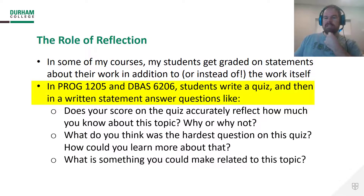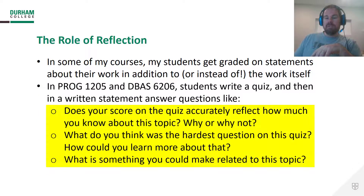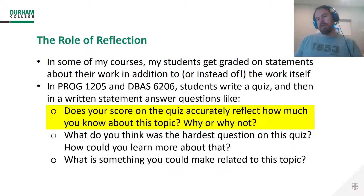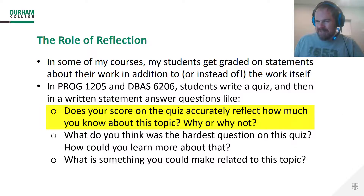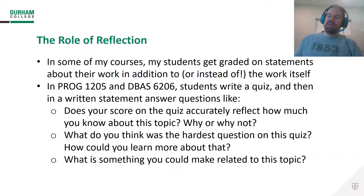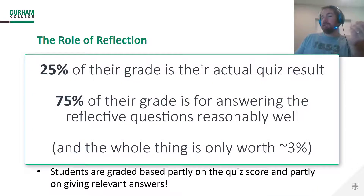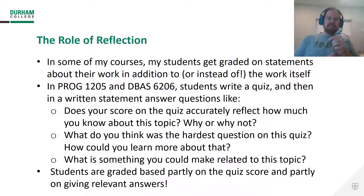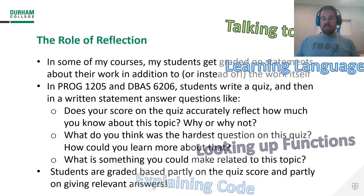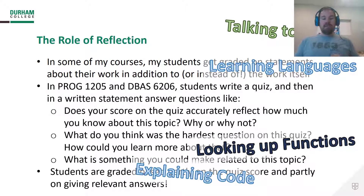In some courses, like PROG 1205 and DBAS 6206, at least right now, these are written statements where they talk about how a quiz went. Some example questions are listed here. The first one — does your score on the quiz accurately reflect how much you know about this topic, why or why not — gives good students who had a bad quiz result a chance to really make the case that they know better. Typically, we tell them to answer three questions from a list of five or so. In PROG 1205, we give 25% of their grade for the quiz result and 75% for just the explanation. This type of reflective exercise allows me to see how they're doing with learning the language, with looking things up, with explaining code, and with how they communicate about it.